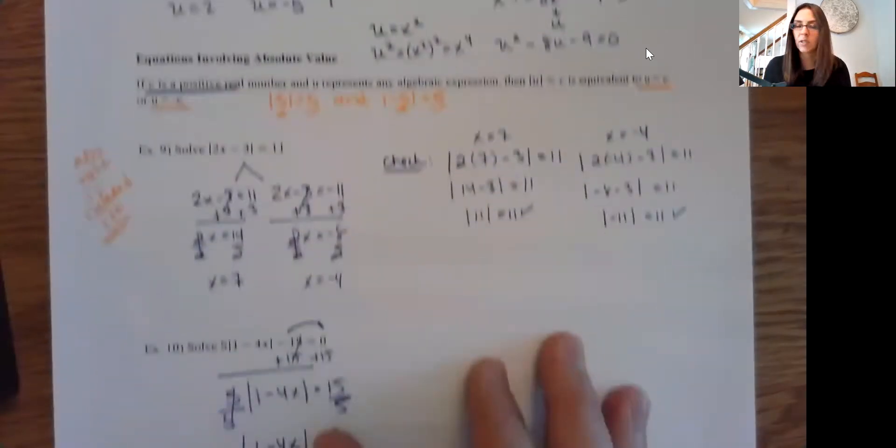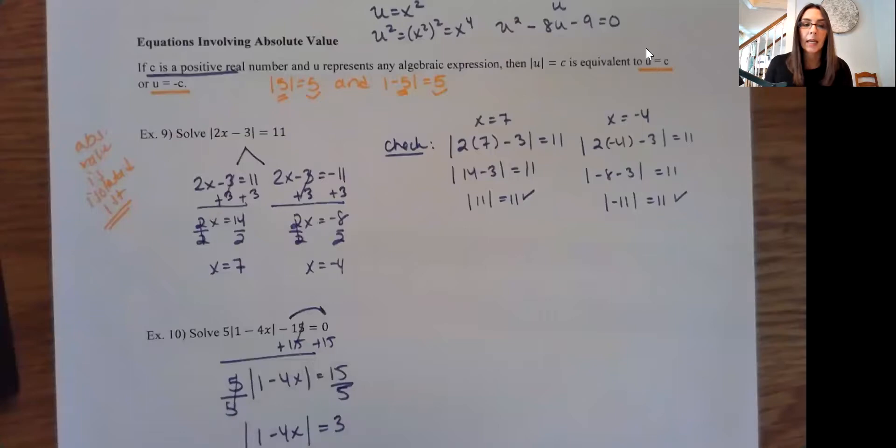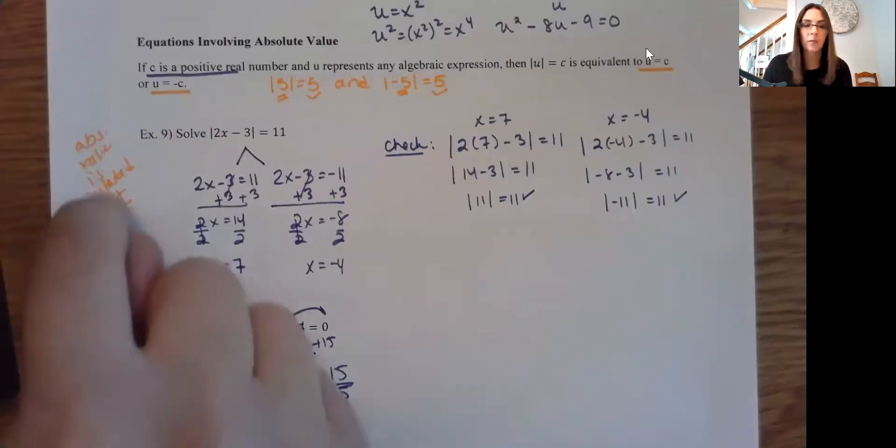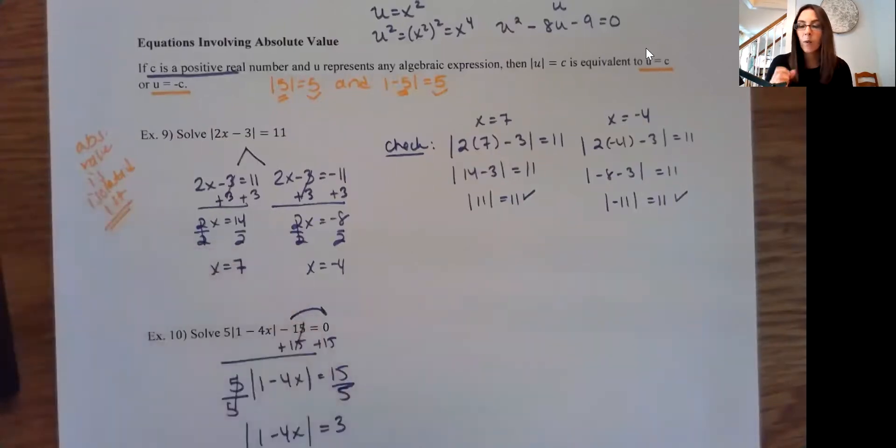And then the one we just wrapped up, of course, are your absolute value equations. Here, you do need to make sure your absolute value is isolated first. And once it is, assuming the other value is positive, you're going to split into two equations to solve.